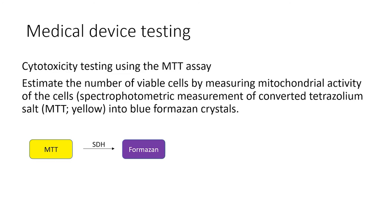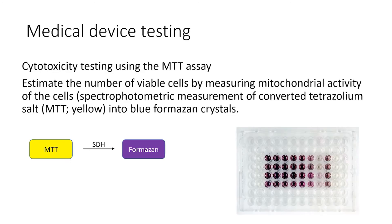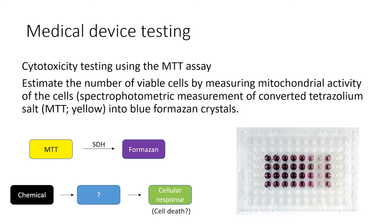A reduction in measured purple indicates a reduced number of living cells. This picture shows the MTT assay on cells exposed to the methacrylate 2-hydroxyethylmethacrylate, or HEMA. Increasing HEMA concentrations results in less purple color development. Although such results can indicate a cytotoxic potential, it is difficult to predict possible clinical side effects without knowing the cause of cell death, or even knowing if the cells are dead.